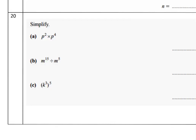Problem 20: b^2 times b^4 equals b^6. m^15 divided by m^5 — subtract the powers — equals m^10. (k^3)^5 — multiply the powers — equals k^15.